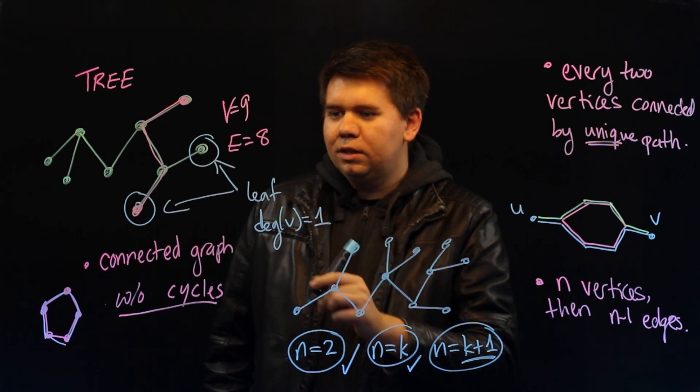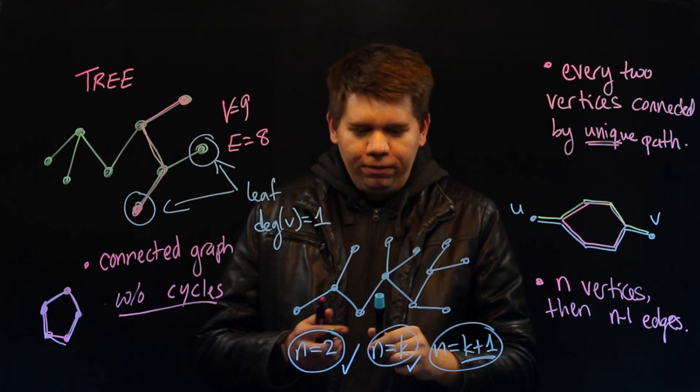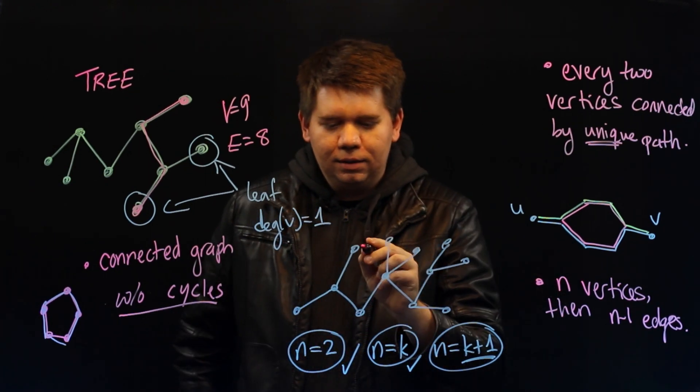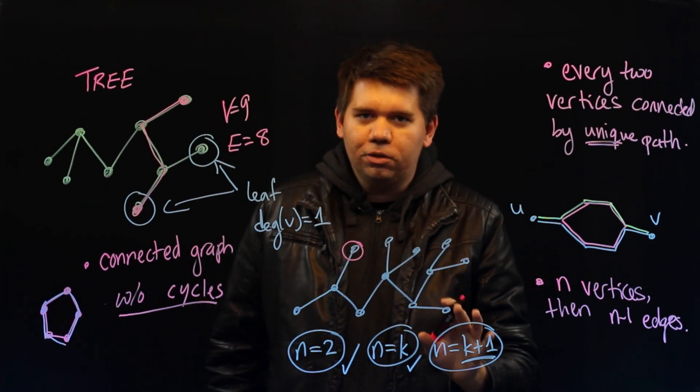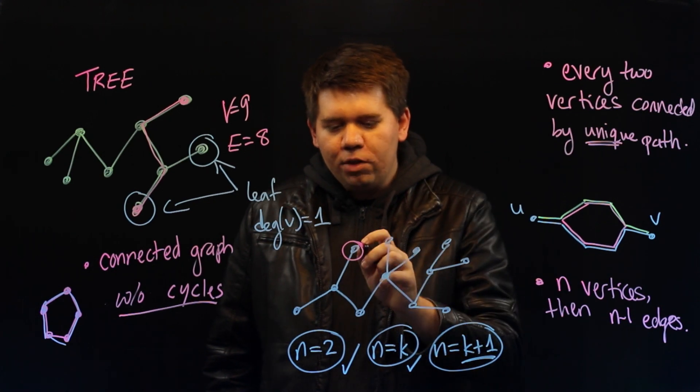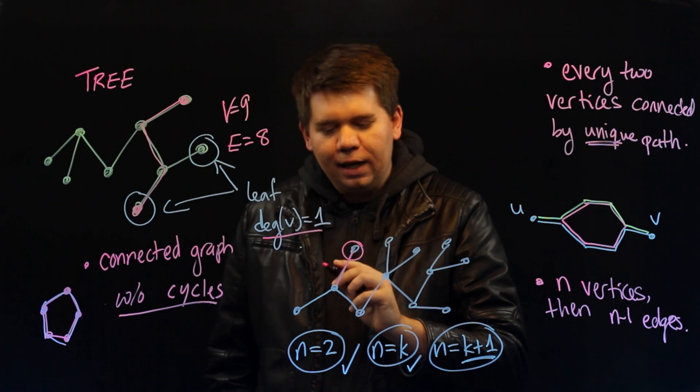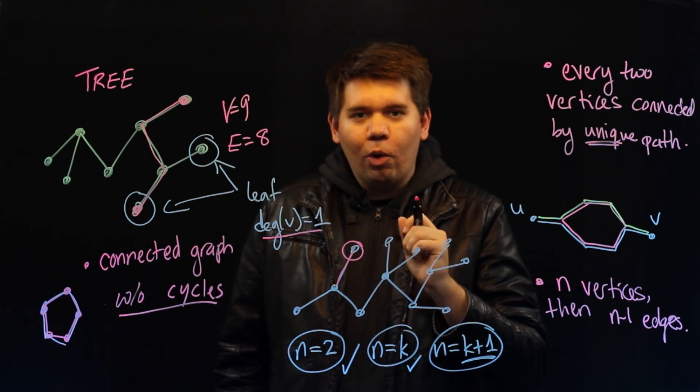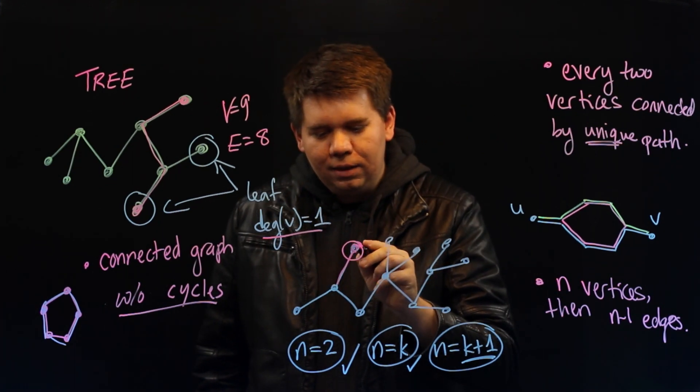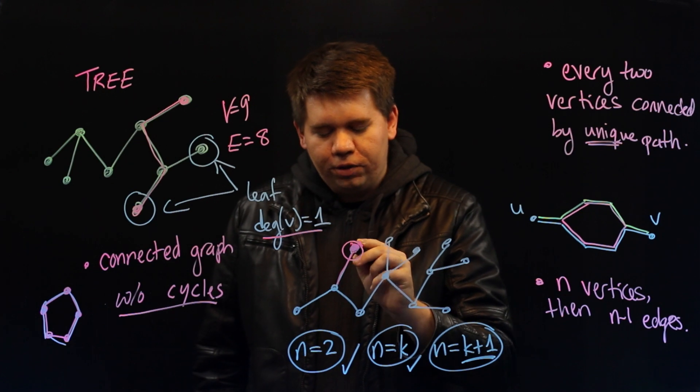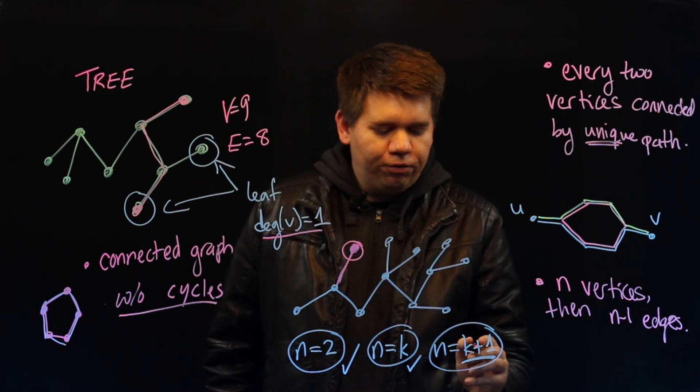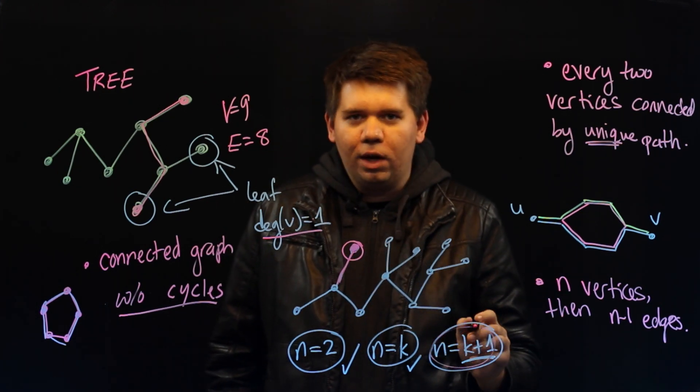Well then, since we said every tree has a leaf, you can pick some leaf of this graph. And we know the leaf will have degree 1, which means there'll be just one edge connected to it. What we will do is we'll delete that vertex and that edge from the graph with k plus 1 vertices.